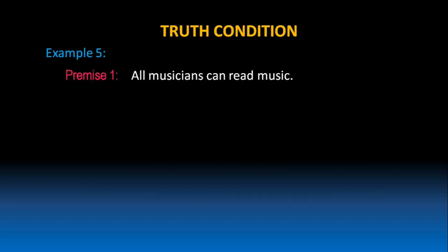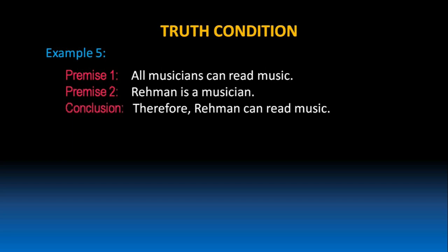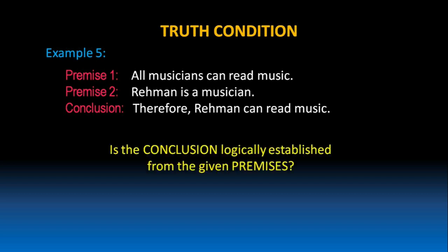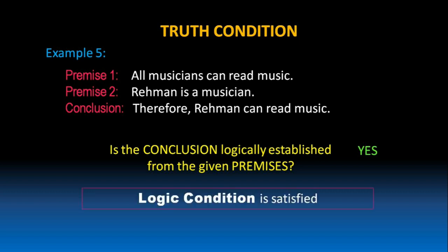Let's take one more example. All musicians can read music. Rahman is a musician. Therefore, Rahman can read music. In this example, is the conclusion logically established from the given premises? Yes, of course, because premise 1 says all musicians can read music. We can conclude Rahman can read music because he is a musician. So, the logic condition in this argument is satisfied.